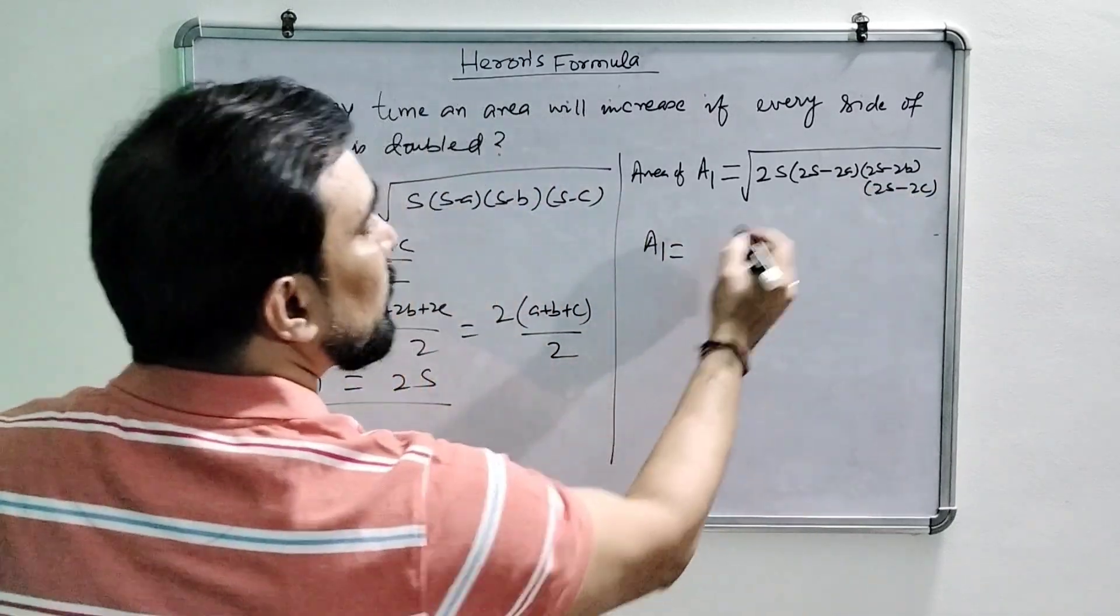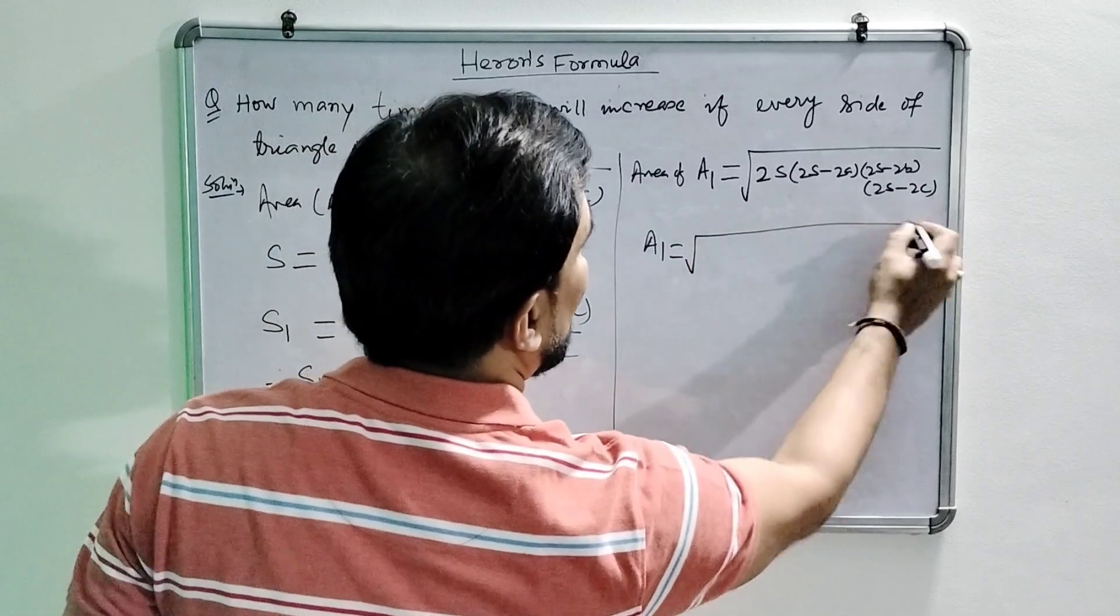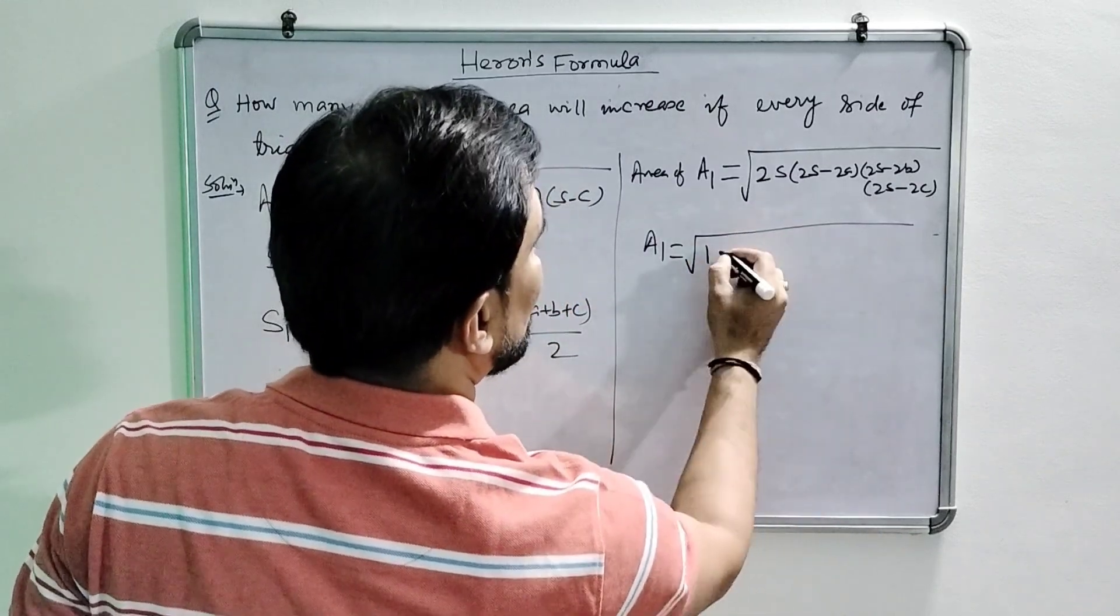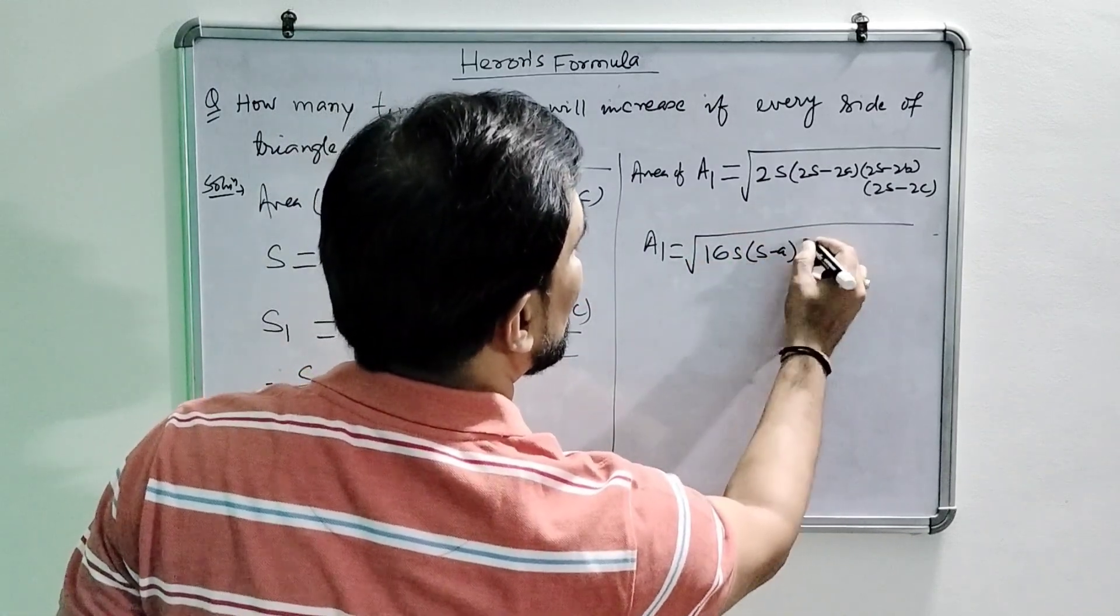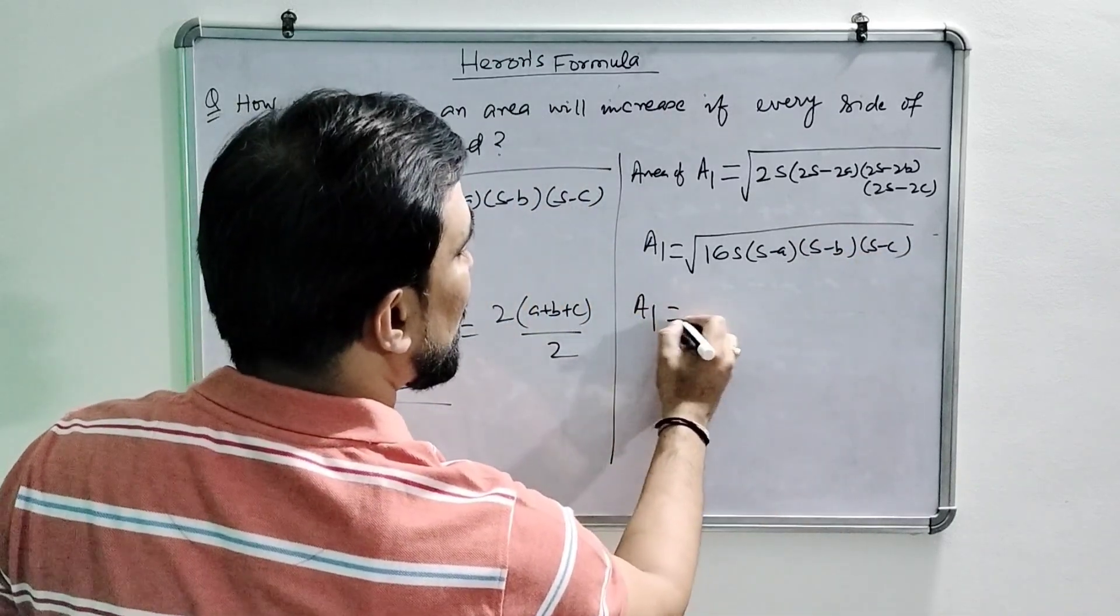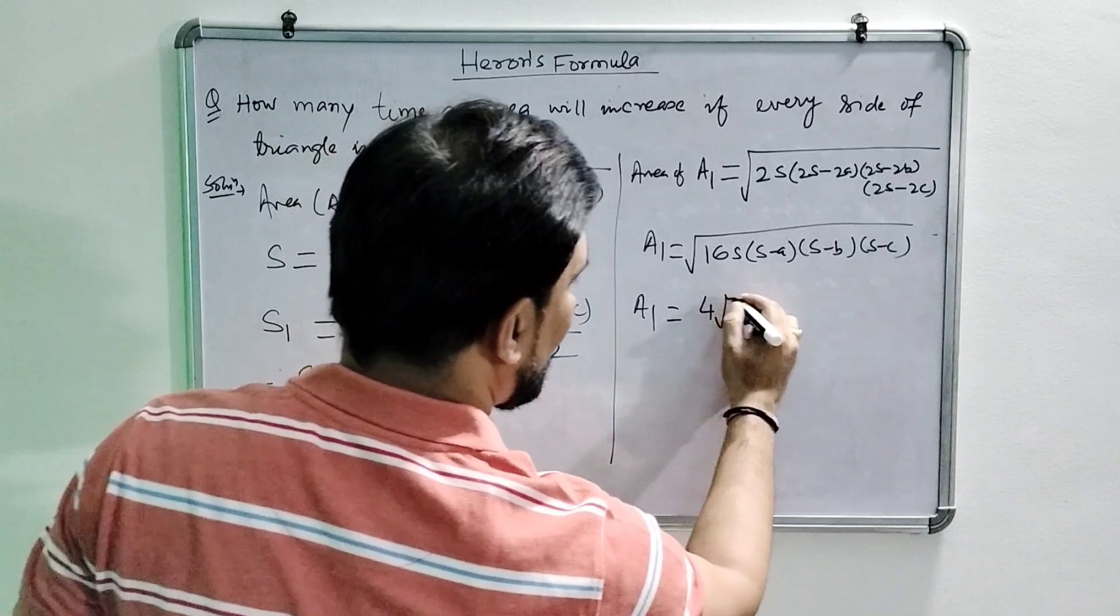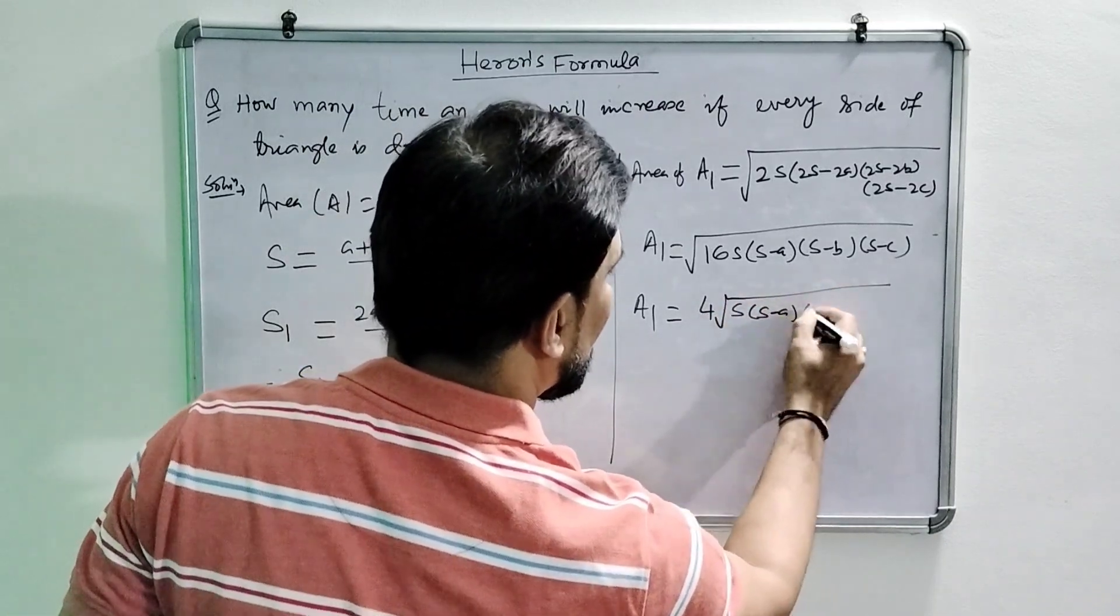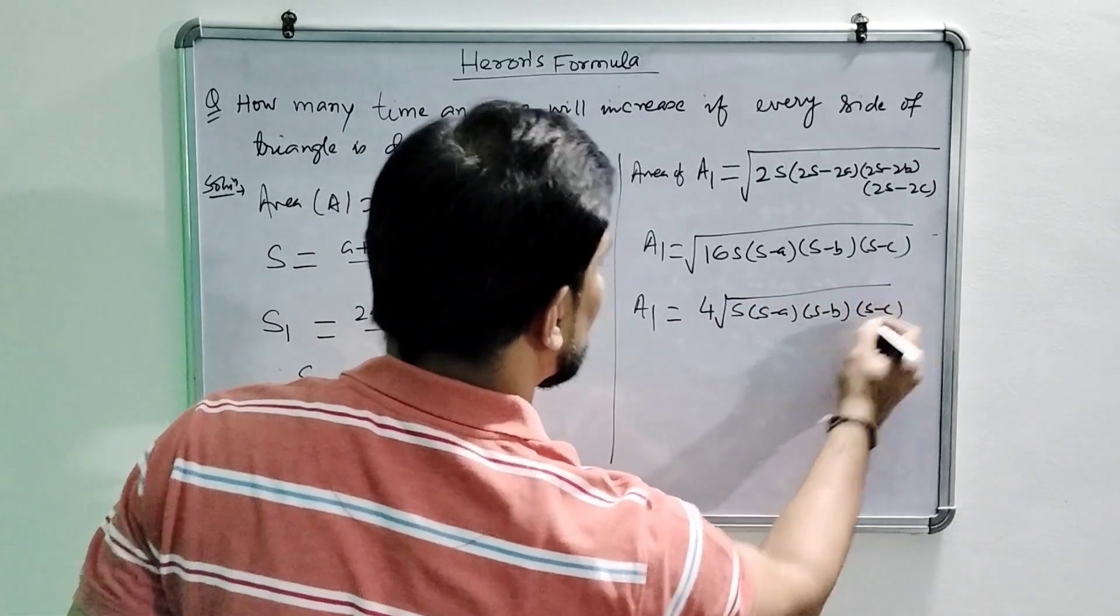So a1 will be, if you look here 2 is common so we can write 16 s into s minus a, s minus b, s minus c. So new area is 4 under root s, s minus a, s minus b and s minus c.